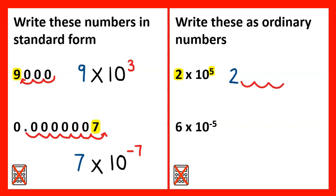And we can see that we're multiplying by 10 to the power of 5, which means the decimal point has shifted 1, 2, 3, 4, 5. And we can fill all of these gaps with zeros, or placeholders. So the answer would be 200,000.